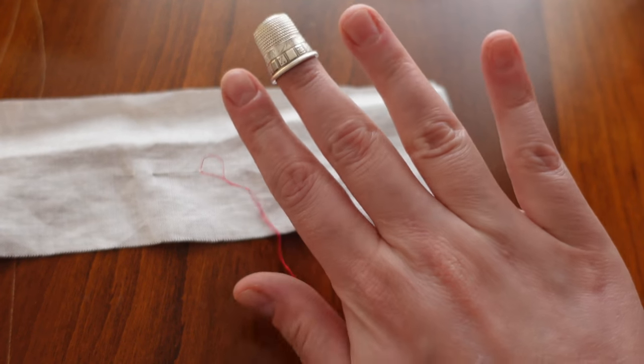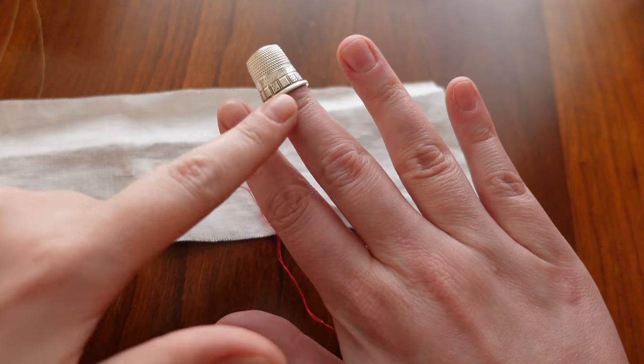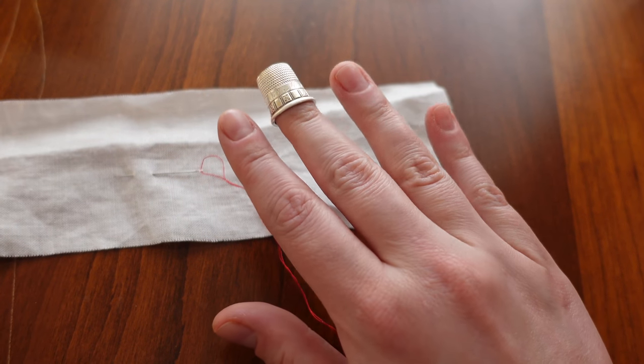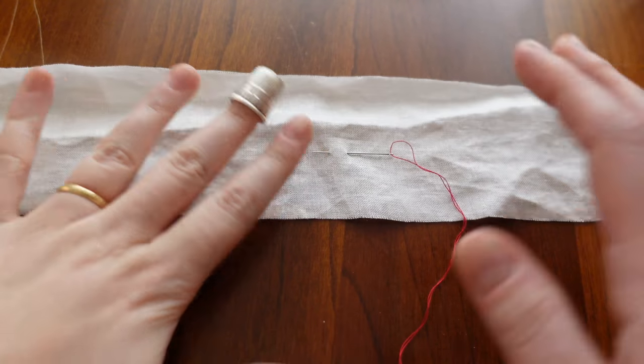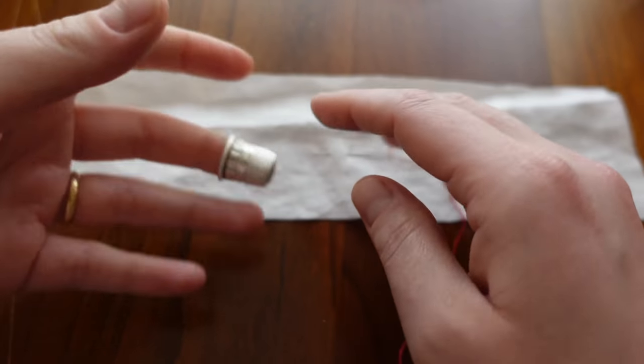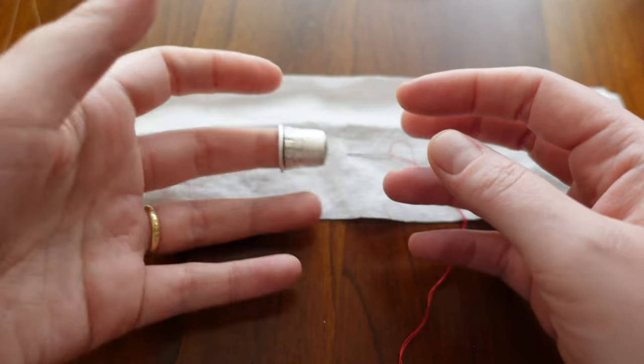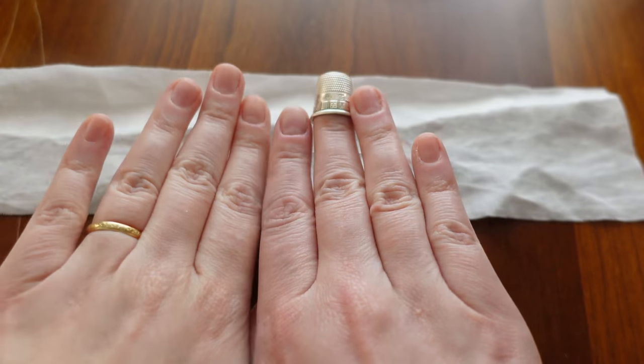As you can see I just put my thimble on the middle finger of my dominant hand. I'm right-handed but if I was left-handed I'd put it on this finger. Now the tricky thing is that it actually doesn't fit me very well in my left hand because my right hands are slightly bigger.